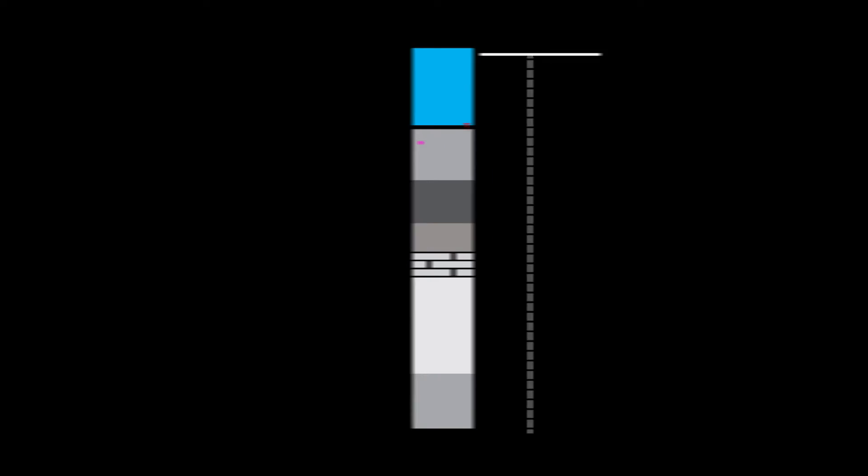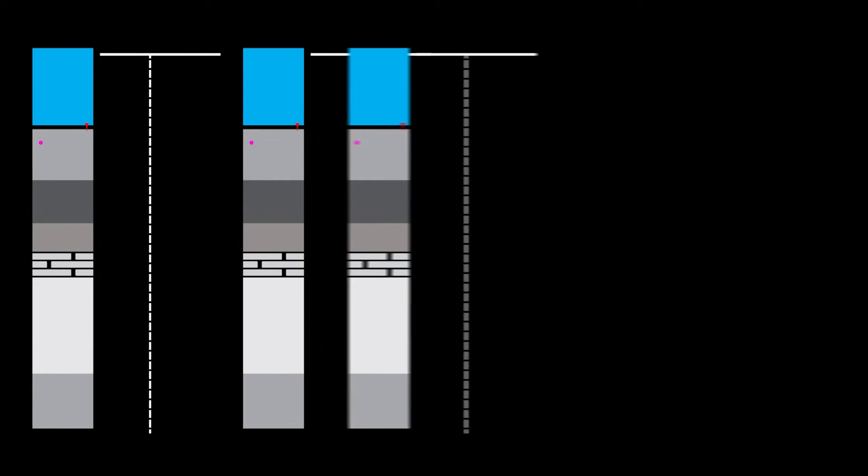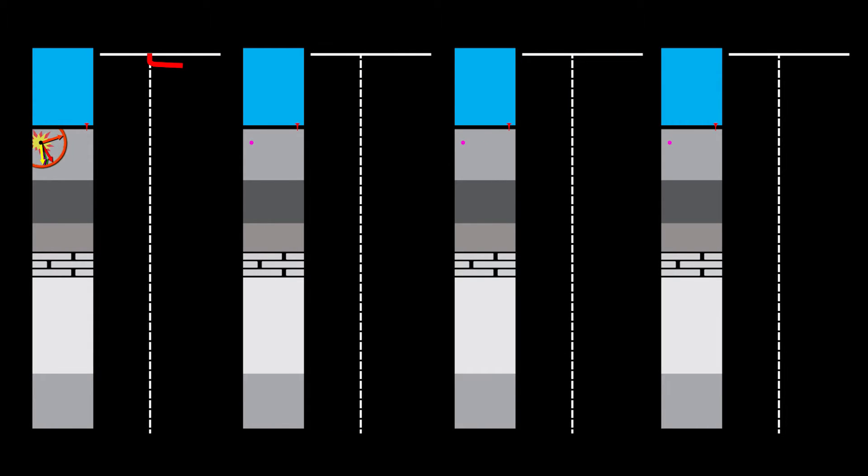If we move the single shot and single geophone several times, multiple zero offset traces can be recorded.